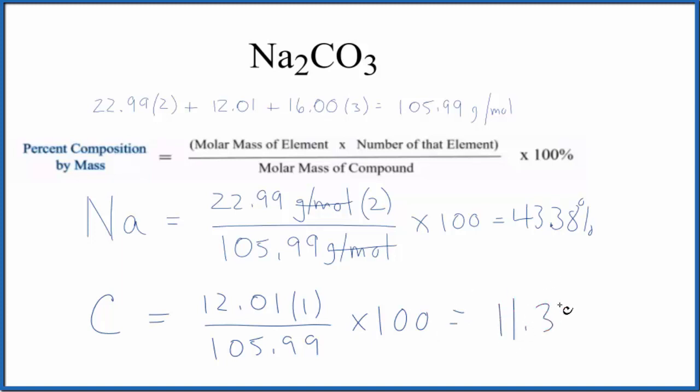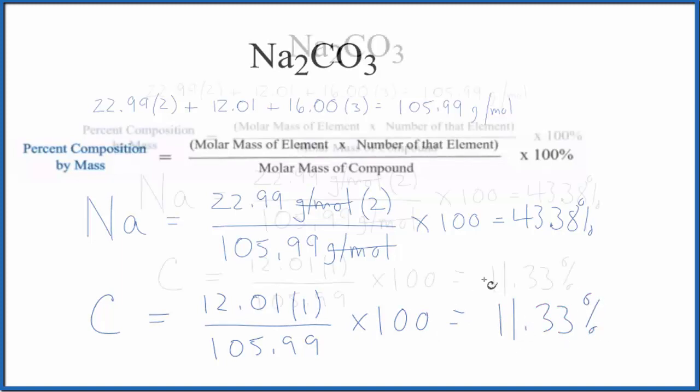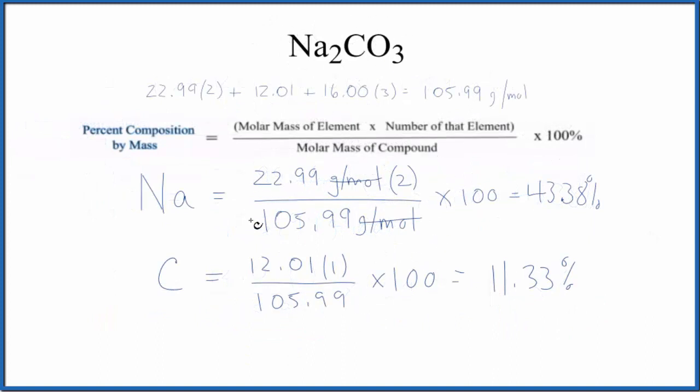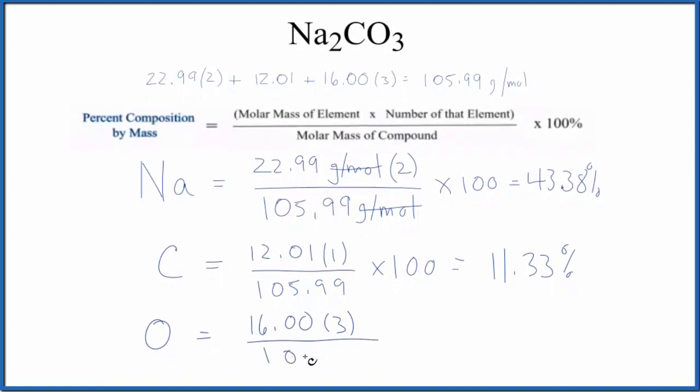For the oxygen. So oxygen on the periodic table, 16.00 grams per mole. The number of the element, we have three oxygen atoms and we divide that by the molar mass for the compound. Multiply by a hundred and we end up with 45.29%.